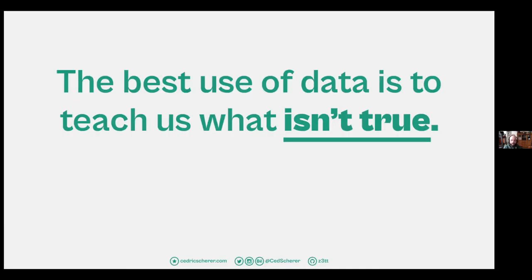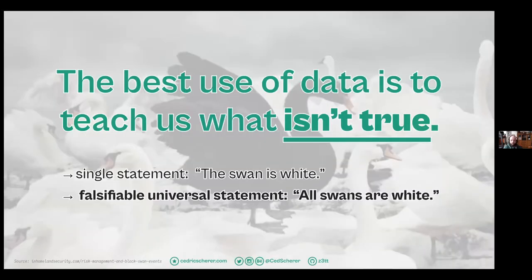The second learning is that the best use of data is to teach us what isn't true. It's always easy to find something in your data that supports your claim. But it might be better to search for something to falsify — state a falsifiable universal statement, like 'all swans are white,' and search for the black one. You can prove a statement false with a single example, while a single confirming case doesn't tell us much about universal truth.